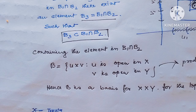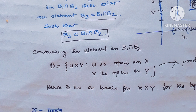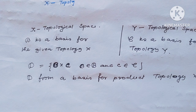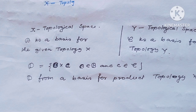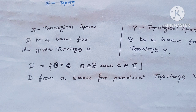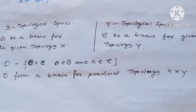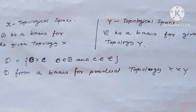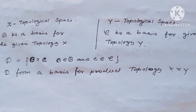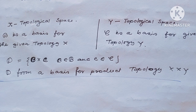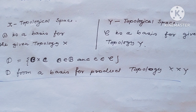If B equals U cross V where U is open in X and V is open in Y, then B is a basis of the product topology X cross Y. Therefore, if X and Y are topological spaces, if script beta is a basis for the topology on X and script gamma is a basis for the topology on Y, then script D — the set containing B cross C where B is a member of script beta and C is a member of script gamma — forms a basis for the product topology X cross Y.